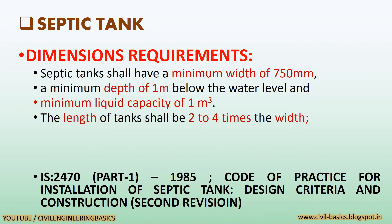Regarding dimensions of septic tanks: septic tanks shall have a minimum width of 750 millimeters, a minimum depth of 1 meter below the water level, and a minimum liquid capacity of 1 cubic meter. The length of tanks shall be 2 to 4 times the width. IS 2470, Part 1, 1985 — Code of Practice for Installation of Septic Tank: Design Criteria and Construction, Second Revision — is used to design septic tanks.